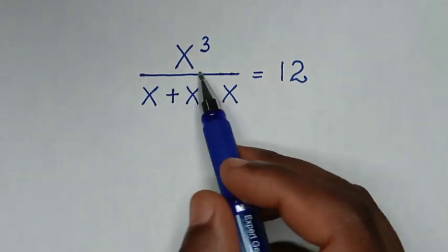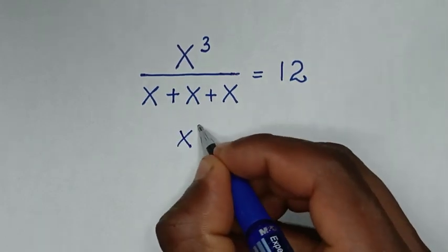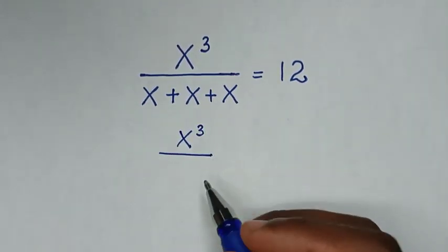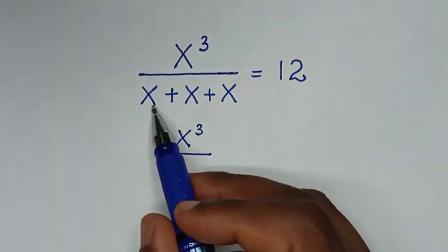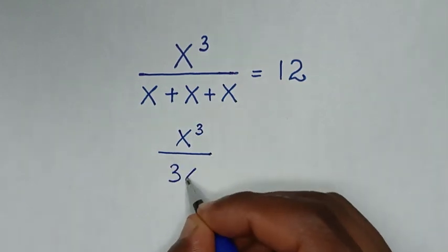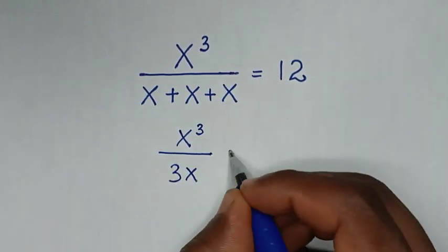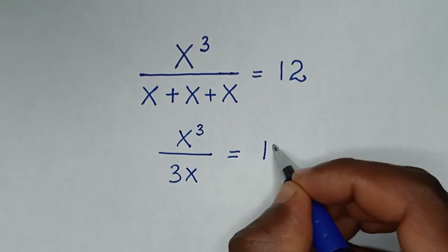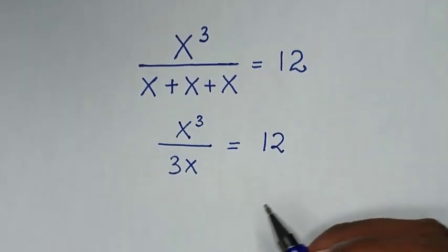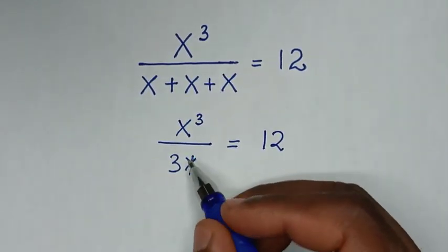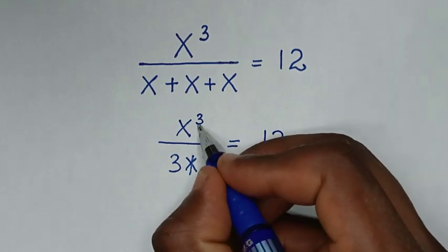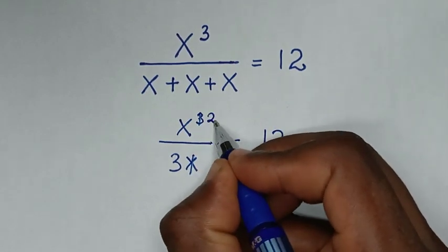Now from here, in the numerator it is x power 3, and in the denominator x plus x plus x is 3x, is equal to 12. Then in the next step, this x will cancel one of the x's, so this power 3 will become power 2.